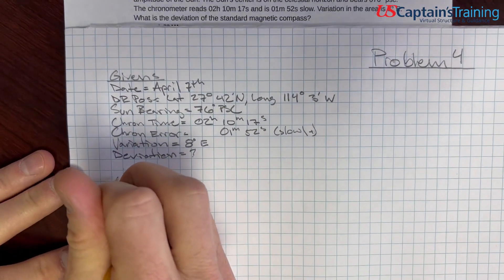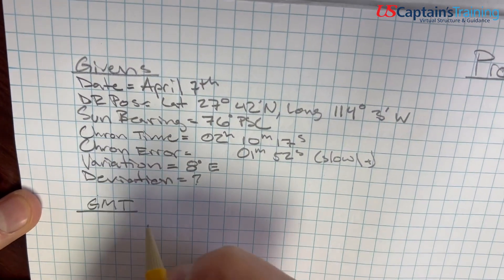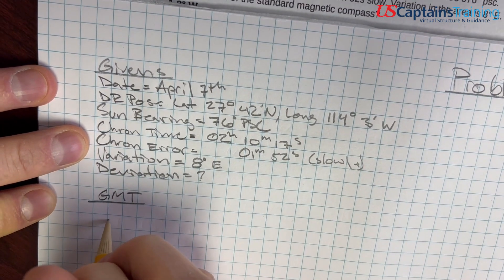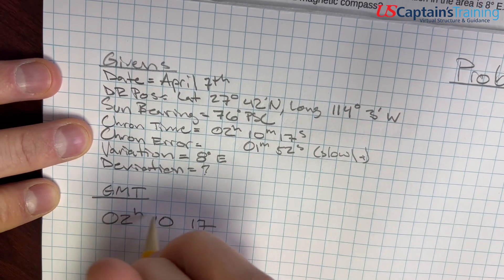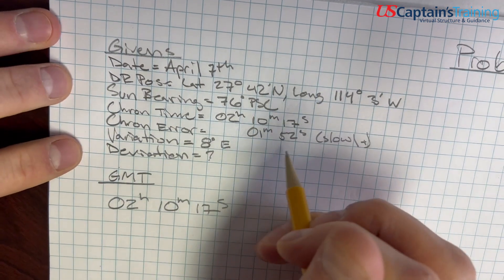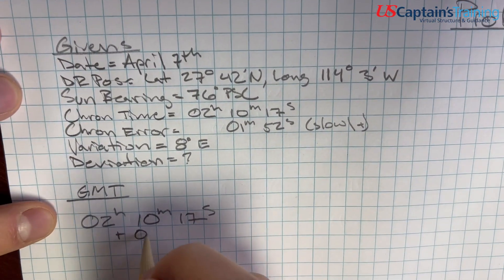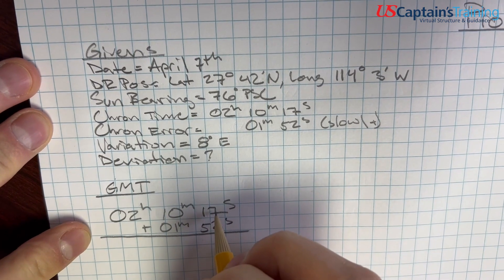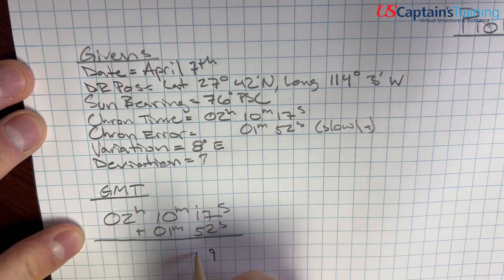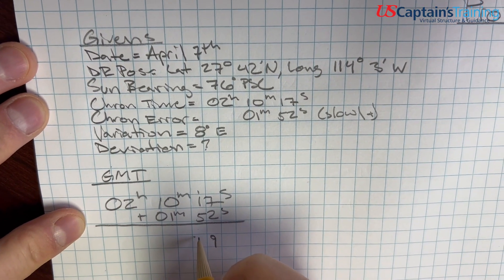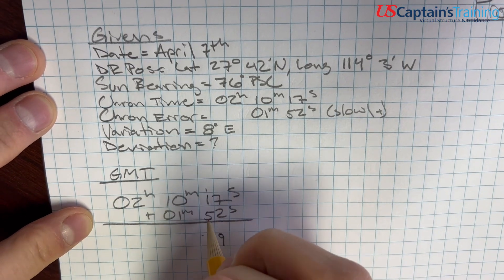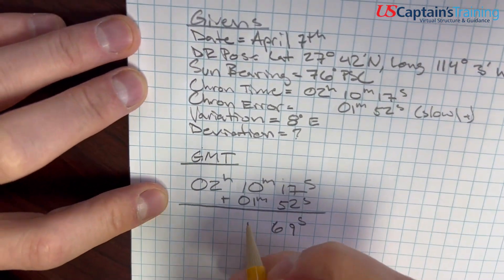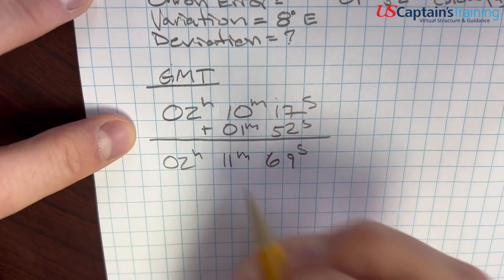So first thing we do to solve this problem is get the GMT, Greenwich Mean Time. And to do that, we take the chron time and adjust it. So the chron time is 02:10:17 and we add the error of 1 minute 52 seconds. That gives us 02:11:69, which is 02:12:09.